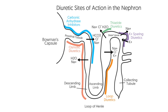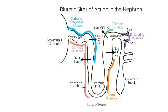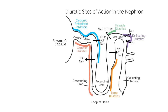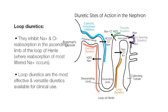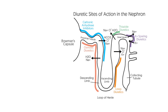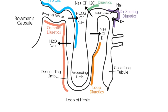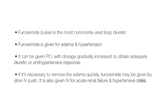Loop diuretics are the diuretic of choice when renal function is impaired or when rapid diuretic effects are required. They inhibit sodium and chloride reabsorption in the ascending limb of the loop of Henle, where reabsorption of most filtered sodium occurs, making them the most effective and versatile diuretics available. Furosemide, or Lasix, is the most commonly used loop diuretic, given for edema and hypertension. It can be given by mouth with dosage gradually increased, or by slow IV push to remove edema quickly. It is also given IV for acute renal failure and hypertensive crisis.